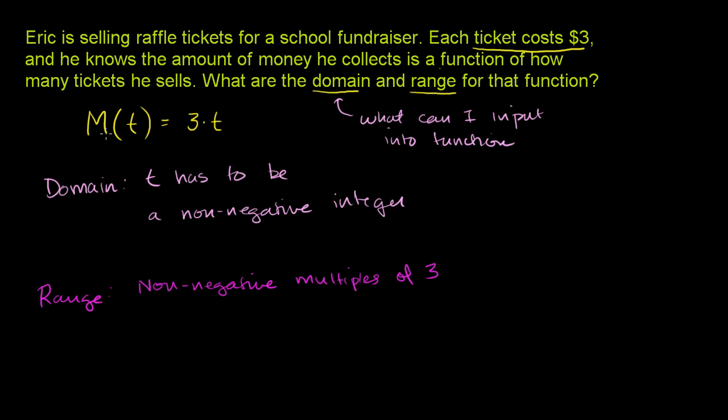Think about it. He'll never be able to collect $2, because he could either sell zero tickets and get nothing. Let me write this down. He might sell zero tickets, so M of 0, he's going to get $0. If he sells one ticket, he's going to get $3.